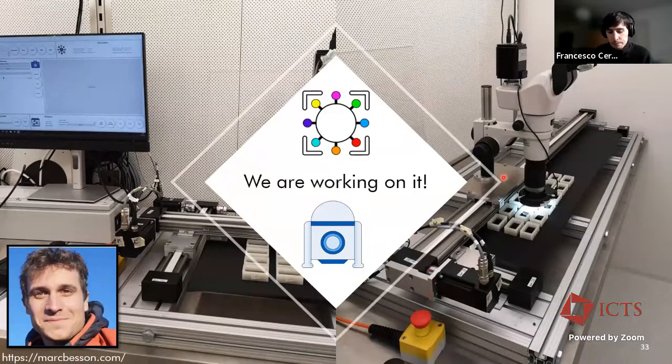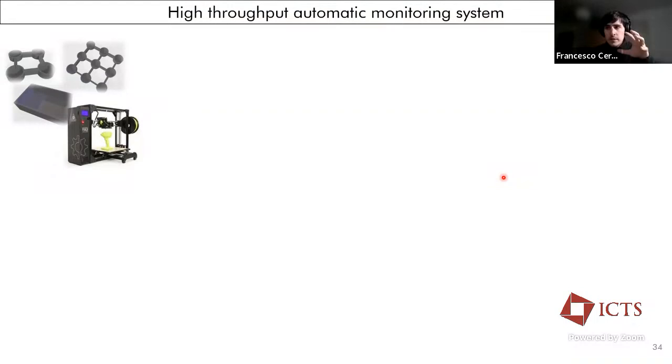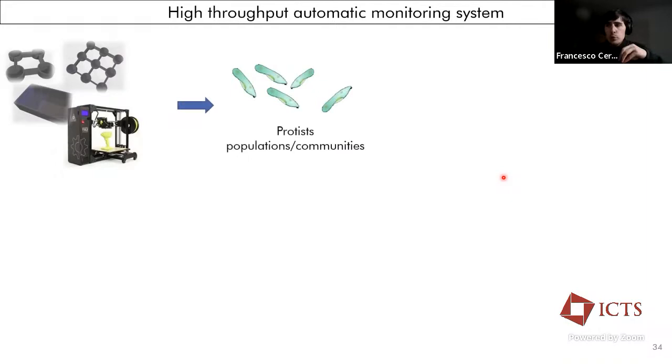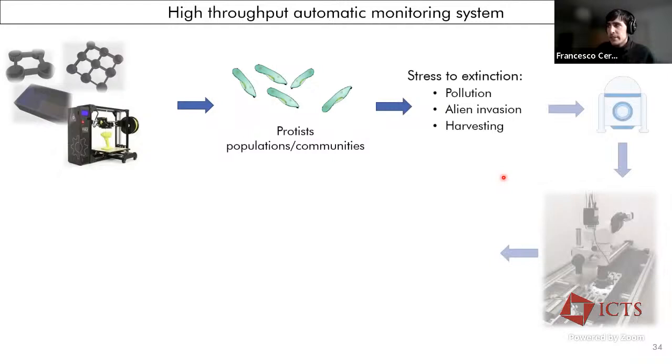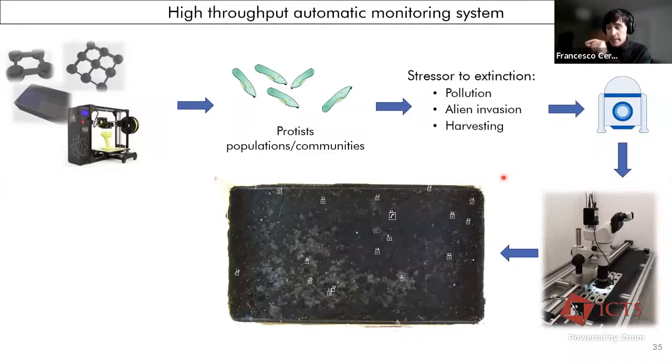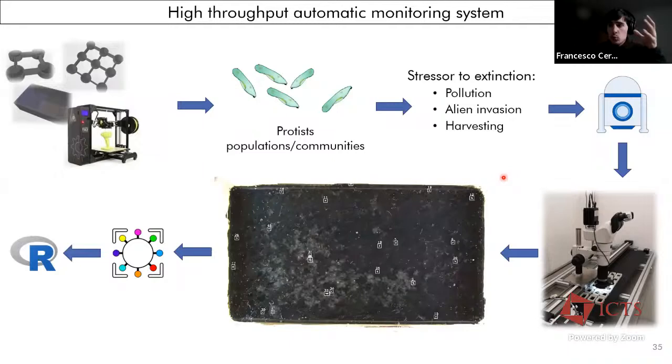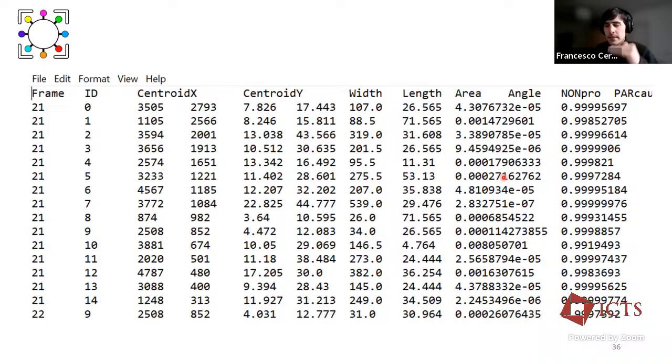And thanks to the work of Marc Besson, my previous collaborator as a postdoc, we developed a pipeline that helped us in getting a high-throughput automatic monitoring system that goes from designing patches in which we can perform the experiment, 3D printing them, and using protist populations or communities that we can stress out until extinction, mimicking what happens in nature like pollution or harvesting them. And then an automatic gantry can acquire videos regularly through time. And from these videos, I hope you can see the tracking of the single cell organisms, we can extract morphological and behavioral data thanks to a video analysis software and another script that we are developing. This is an idea of what the data looks like extracted from the video. Each ID is tracked and we have measurements and direction information.